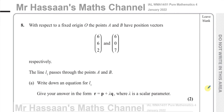Welcome back to Mr. Hassan's Maths channel. I'm now answering question number 8 from the January 2022 International A-Level Pure Mathematics P4 paper. The question is about vectors. With respect to a fixed origin O, the points A and B have the position vectors as shown respectively. The line L1 passes through these two points A and B. Write down an equation for line L1.